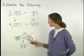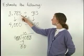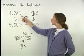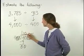Which means that 400 divides into 4,000 ten times. This means that 3,785 divided by 413 is approximately ten.